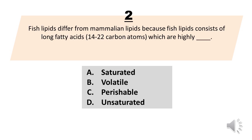Fish lipids differ from mammalian lipids because fish lipids consist of long fatty acids, 14 to 22 carbon atoms, which are highly blank. A. Saturated. B. Volatile. C. Perishable. D. Unsaturated.